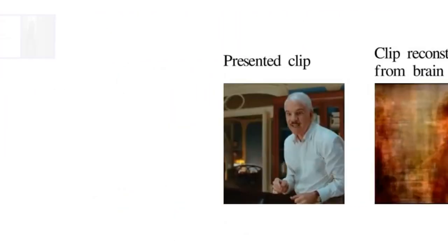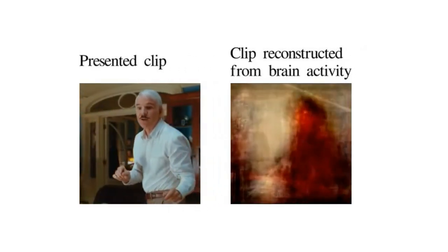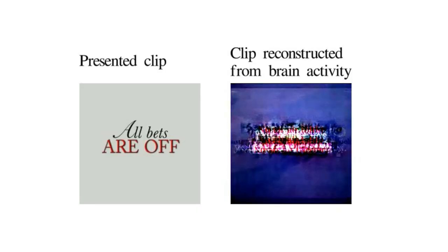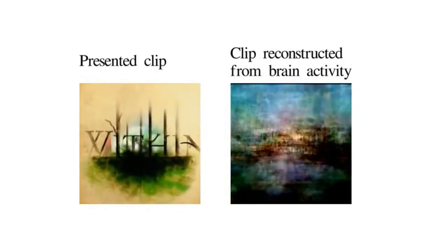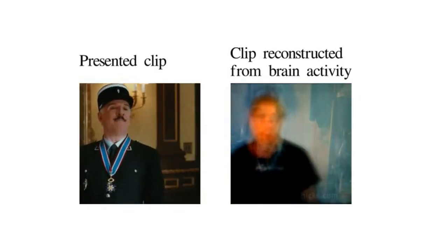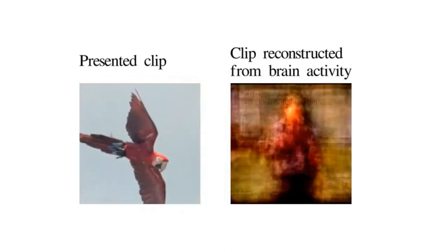Here are the results. On the left are new, unrelated clips that the subjects were shown, and on the right is what the software guessed they were seeing using a mashed-up combination of YouTube clips as an approximation. All of this based on their brain waves.